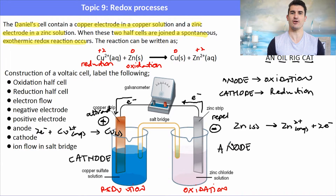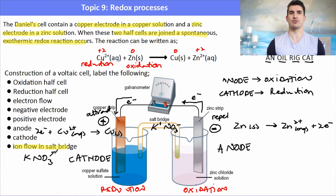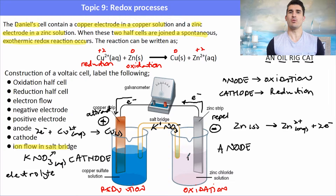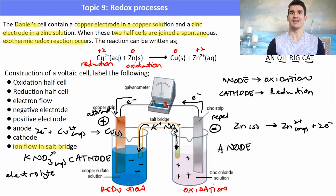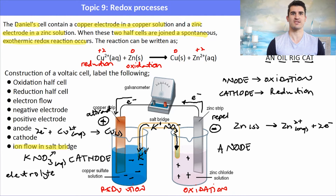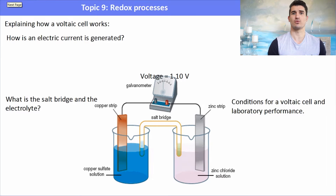For a voltaic cell, the negative electrode is always the anode and the positive electrode is always the cathode. The salt bridge contains ions — in this case KNO₃, a piece of filter paper soaked in potassium nitrate solution — and acts as an electrolyte. In the zinc half cell, because it's losing electrons, there's a build-up of positive charge, so the negatively charged anions in the salt bridge migrate towards the anode. In the copper half cell, there's a build-up of negative charge, so the potassium cations migrate towards the cathode.